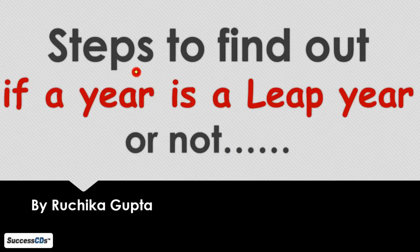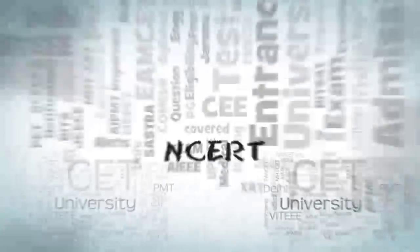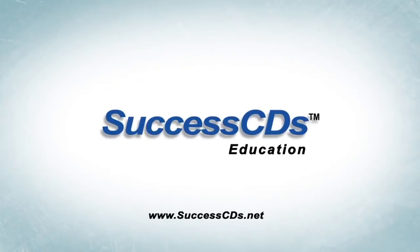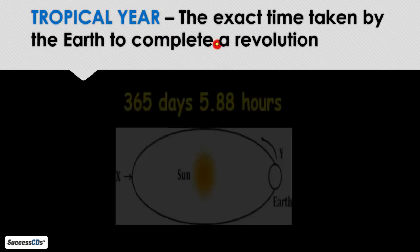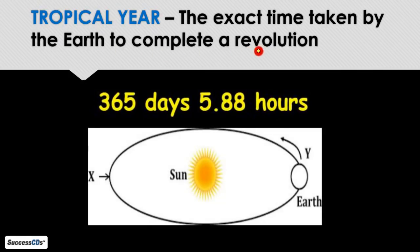Another topic we'll discuss is the steps to find out if a year is a leap year or not — how you can calculate, given a particular year, whether it is a leap year. First of all, I'll introduce a new term: a tropical year. What is a tropical year? It is the exact time taken by the earth to complete a revolution.